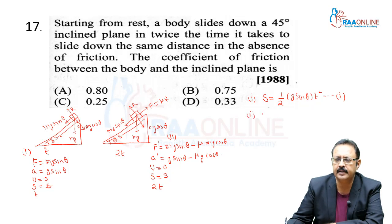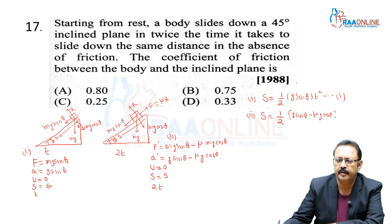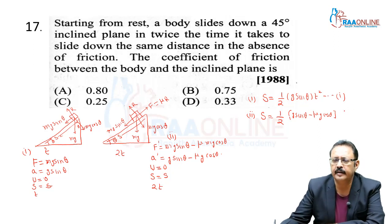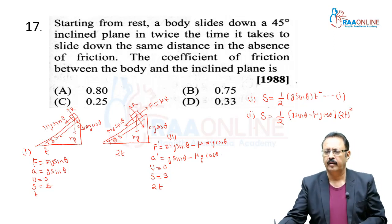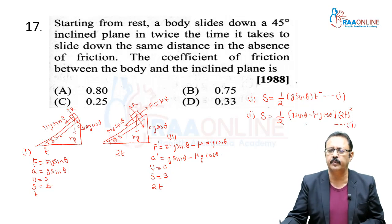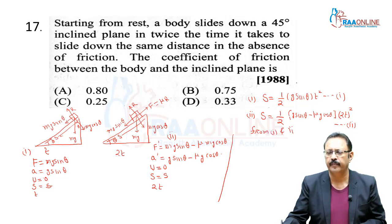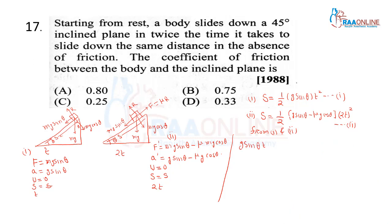Since s is the same in both cases, we equate equations 1 and 2. The ½ cancels. So g sinθ · t² = (g sinθ − μg cosθ) · 4t². Cancel t² with t².